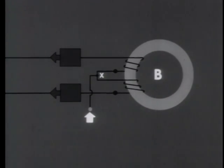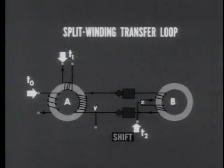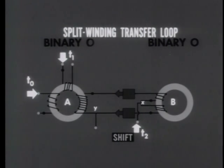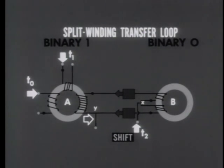But if the branch currents are not equal, then one or the other of the magnetic fluxes will prevail. The pulse we've been applying is the shift pulse for the loop, and its time designation is T2. To demonstrate the operation of the split winding transfer loop, we'll clear both cores to binary zero. Now we'll apply the three input pulses in sequence. At time T0, a pulse comes in the non-dot side of the left winding, and core A is switched to binary one. Ordinarily this switch would produce a pulse coming out of the non-dot side of the output winding, but the lower diode prevents flow of current in that direction. Core A now stores a binary one; core B has not been affected.